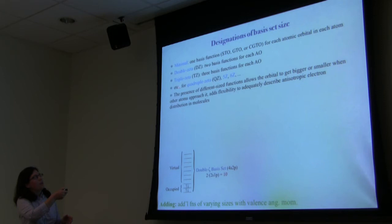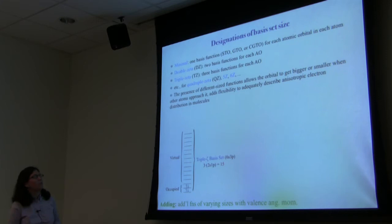A triple-zeta (TZ) basis set has three basis functions for each type of atomic orbital — adding another set of five for 15 total. And so on up the scale for quadruple-zeta, quintuple-zeta, sextuple-zeta.